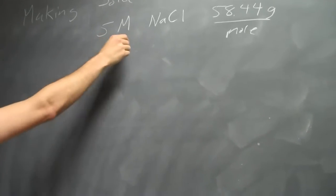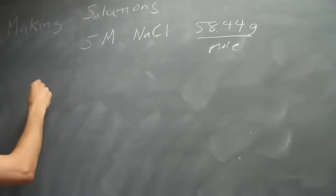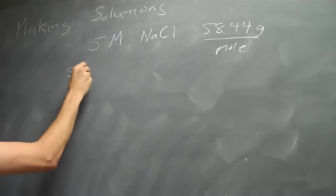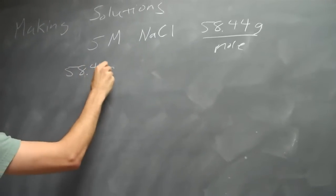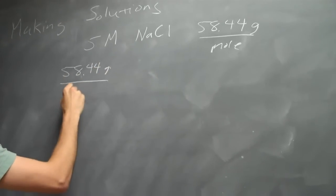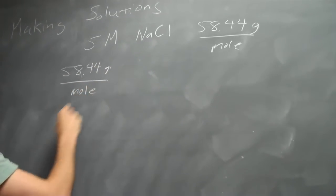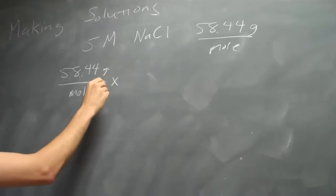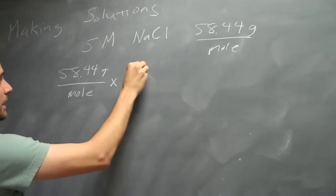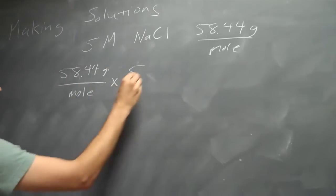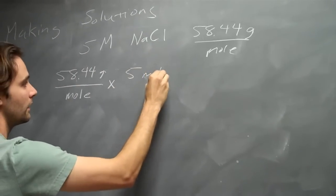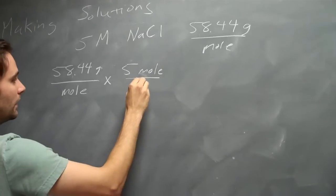So in order to make a 5 molar solution of sodium chloride, you start with the molecular mass. That's 58.44 grams per mole. You multiply this times how many moles you need, which is 5. 5 moles in 1 liter.